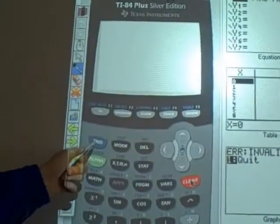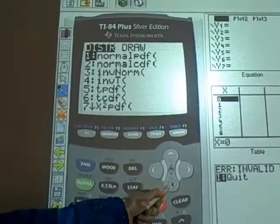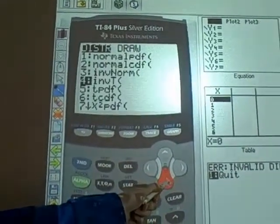To do this on the calculator, you hit the 2nd, and then the VARS button. You scroll down to A, which is binomial PDF.